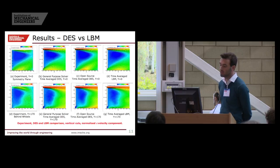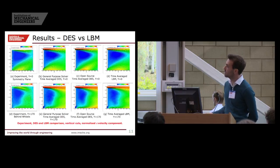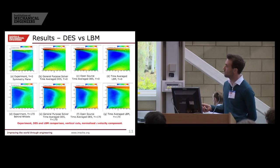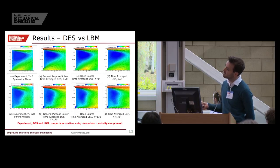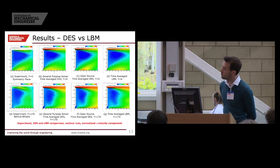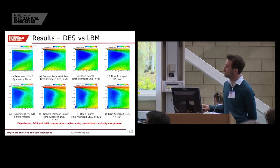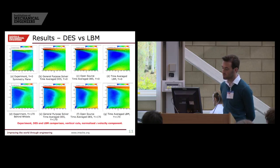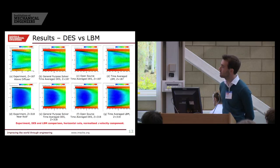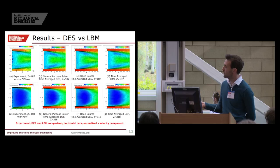Moving on to DES and LBM results: much better agreement, especially in the low velocity structure, compared to the RANS case. Interestingly, differences below that structure show the angularity is significantly different across all cases, and it's appropriate to note that the experiment and the open source appear to agree relatively well. Moving out to the plane behind the wheels, we can see good agreement in the shape of that structure between all cases and to the experiment. This trend is maintained in the horizontal planes, with much better agreement in the shape and contouring of those structures.